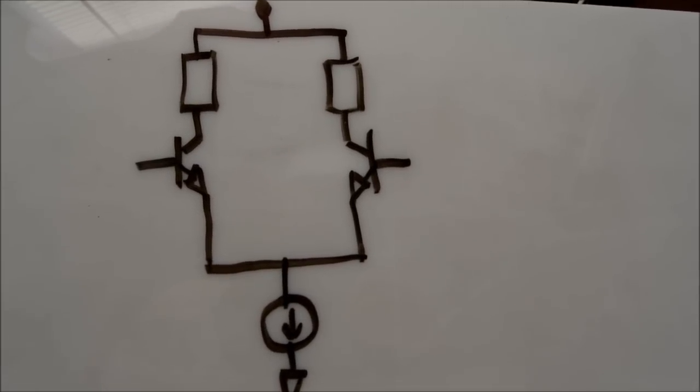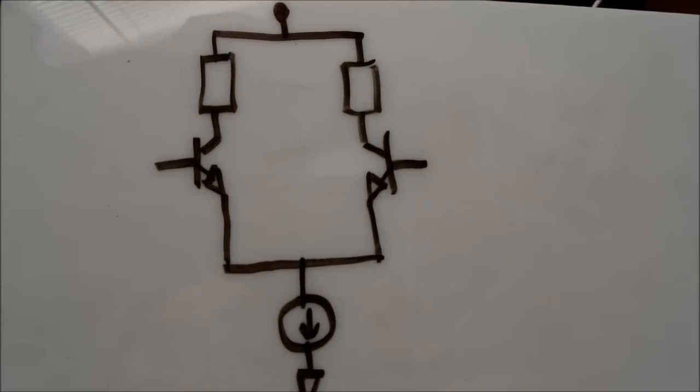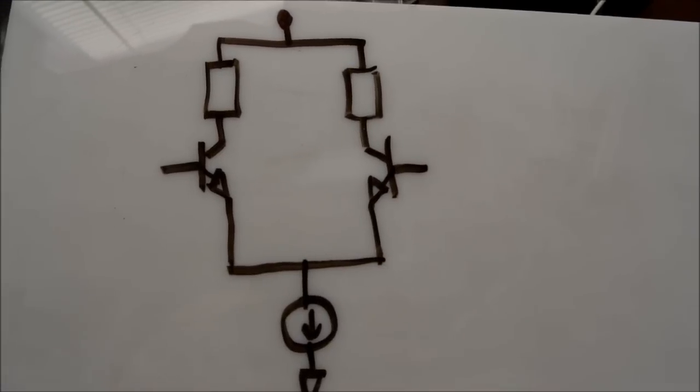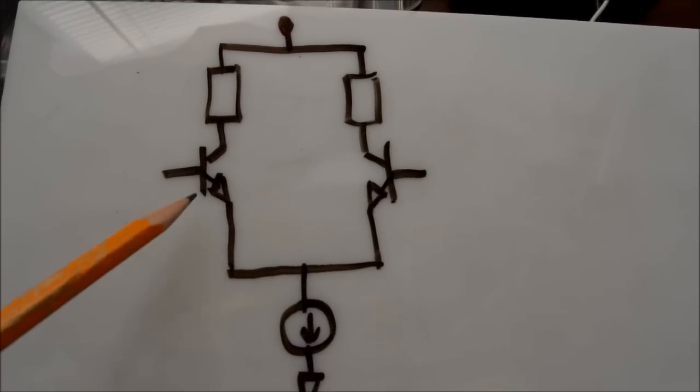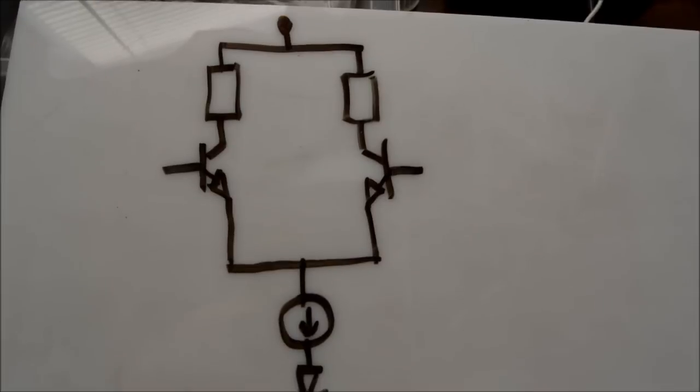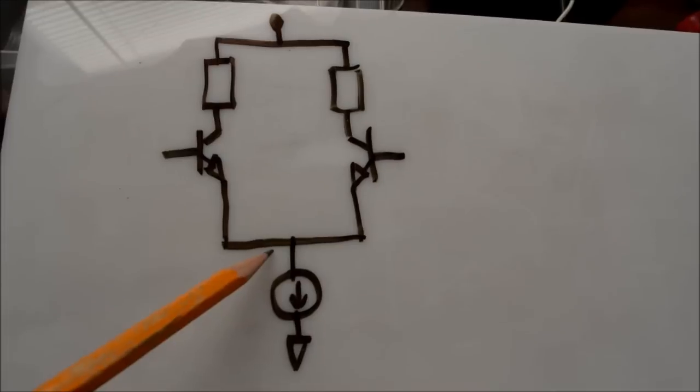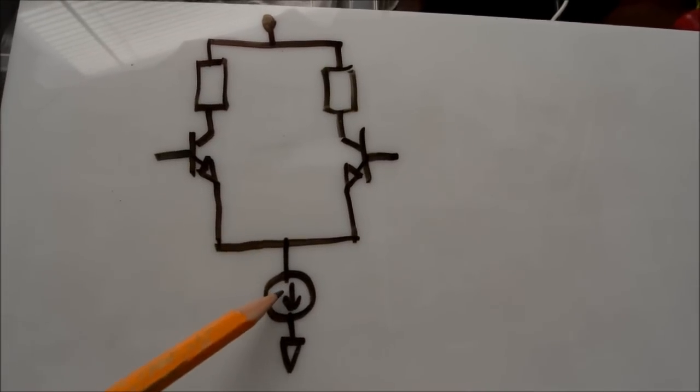It's called the differential amplifier, also known as the LTP or long tailed pair. What you have is a couple of transistor amplifiers. They're connected together into the tail here, which is how it gets that name. And that's simply a current source.